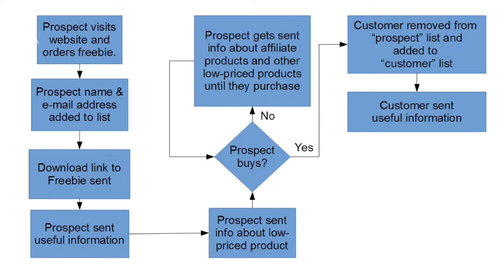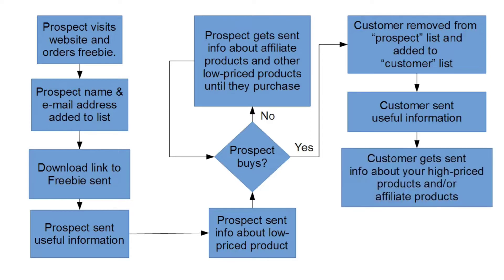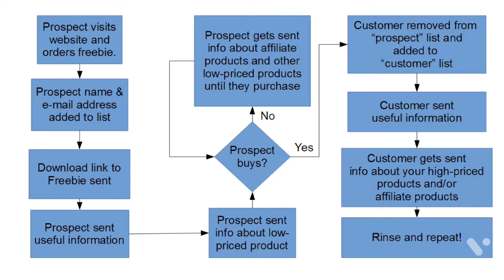Then, of course, the customer gets sent useful information at the same sort of rate. And the customer then gets sent information about your high-priced products and affiliate products at the same sort of price range. You just simply rinse and repeat all the way through your sales funnel. This is an ongoing process that keeps going on for every stage in the sales funnel that your prospect or customer is at.